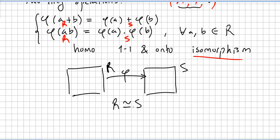Because an isomorphism is used to show that two rings are algebraically identical. A homomorphism is a simple mapping.